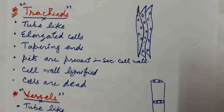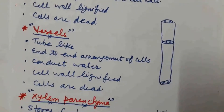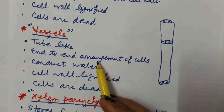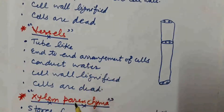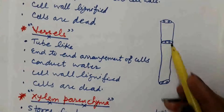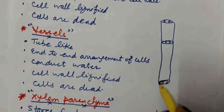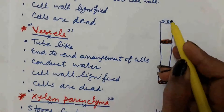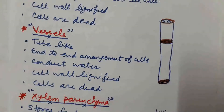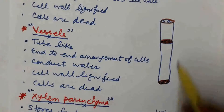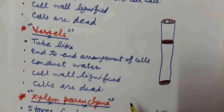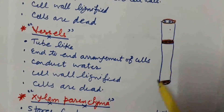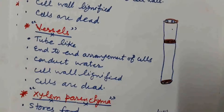The second type of cell present in xylem is vessels. Vessels are also tube-like cells. Cells are arranged one above the other in an end-to-end arrangement. The ends are not tapering like tracheids, which is why one cell sits directly above another. They also help in conduction of water and mineral salts. Cell wall is also lignified and cells on maturity are dead.